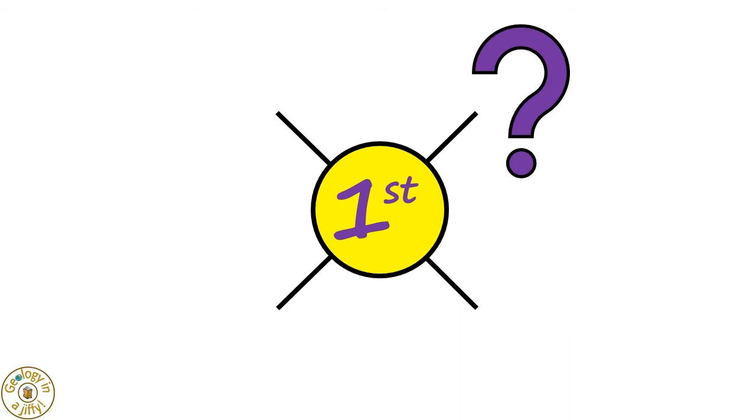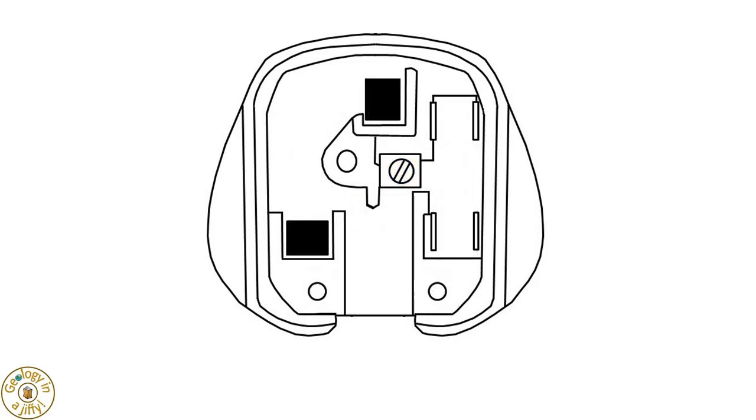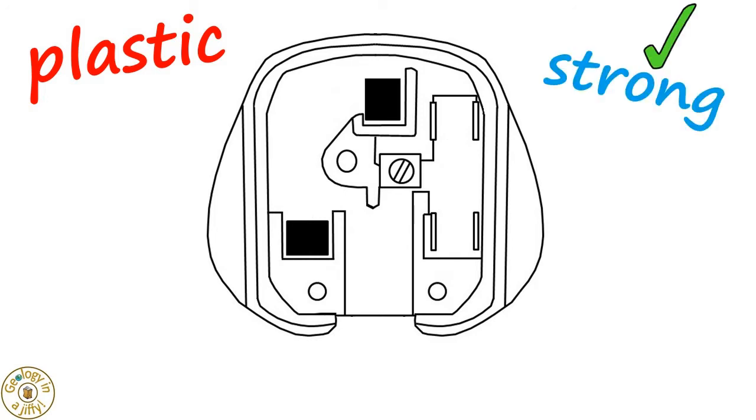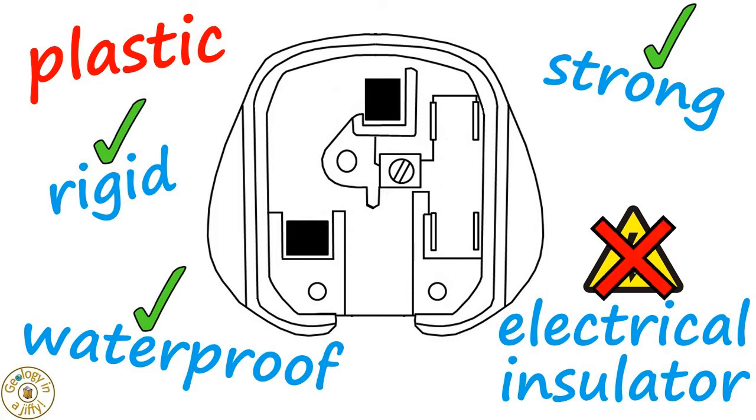The first is its outer casing. If we look into our plug and take out all the smaller parts, we are left with this shell which is made of plastic, so it makes the casing strong, rigid, waterproof, and it's also an electrical insulator.